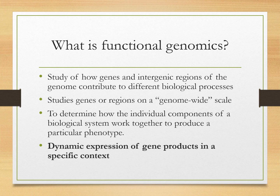Before beginning functional genomics, we first have the whole genome sequence of a particular species. Then with the help of bioinformatics tools or other techniques, we figure out which is the coding region and which is the non-coding region — where the genes are and which is the intergenic region. We also try to determine how individual components of a biological system work together to produce a particular phenotype, because many phenotypic characteristics are controlled by many genes in higher eukaryotic organisms. We need to understand the regulatory genes or regulatory regions controlling the expression of those genes.